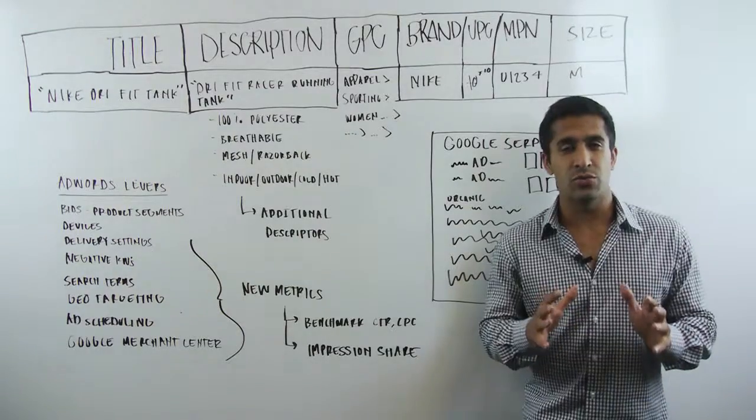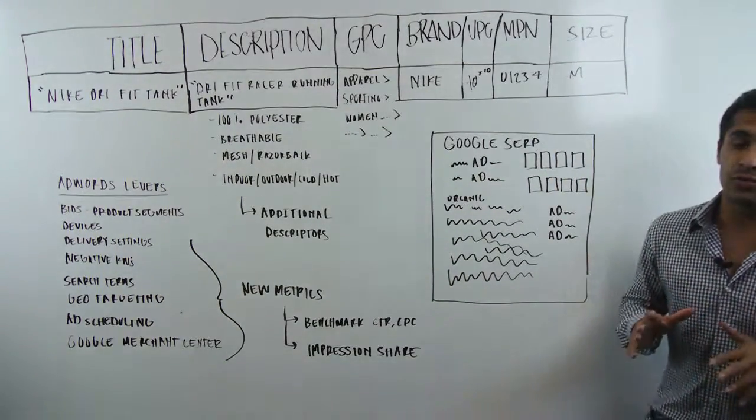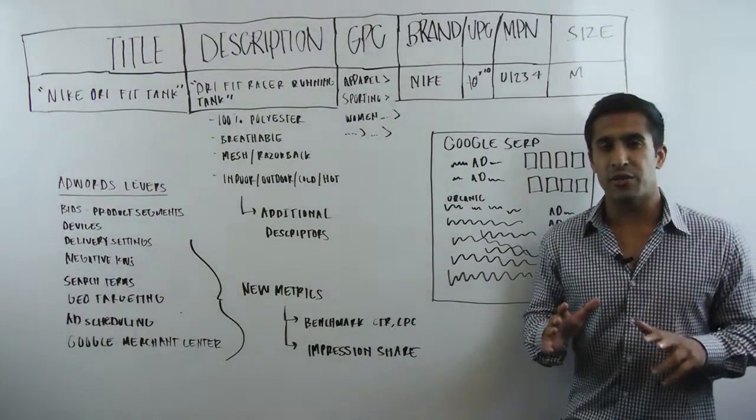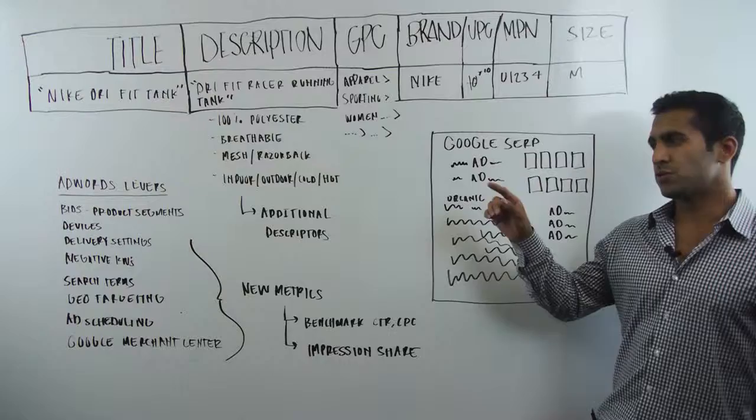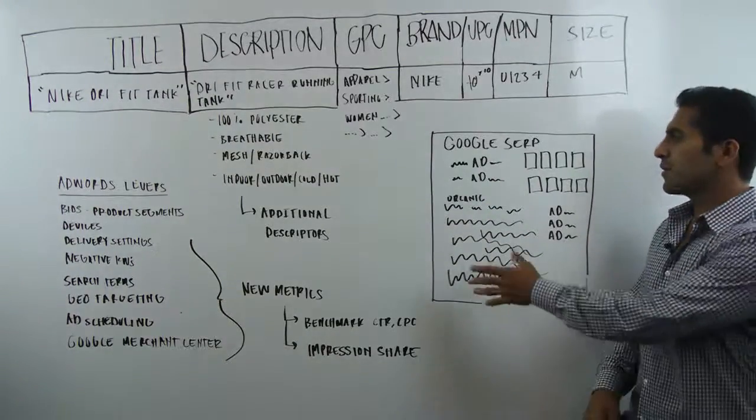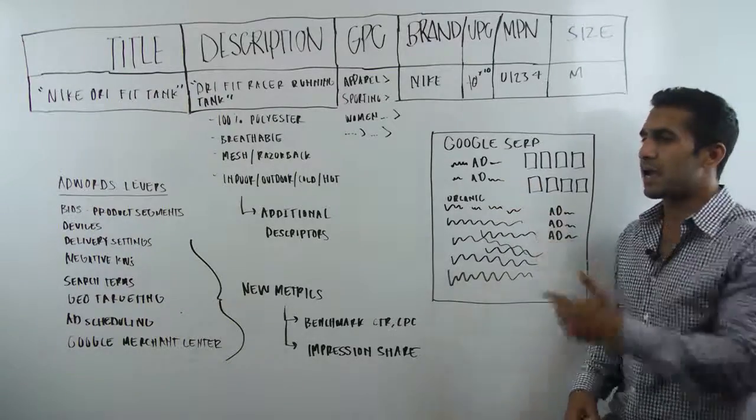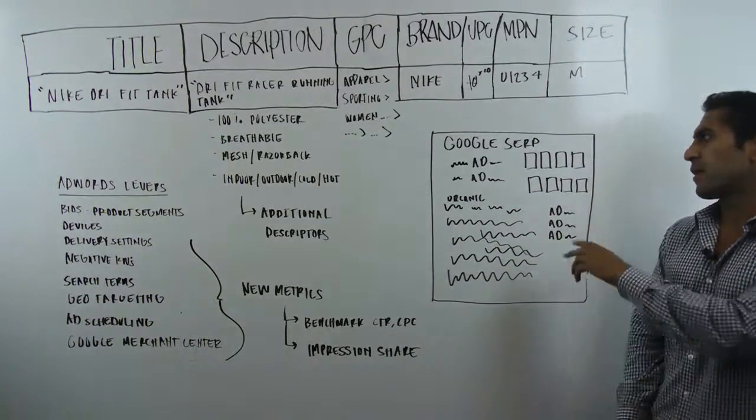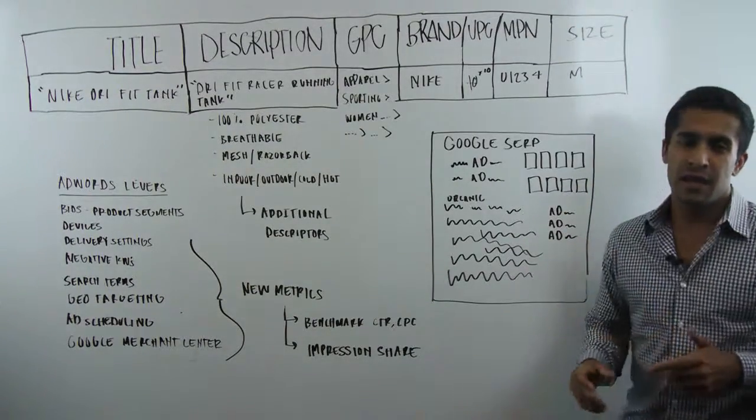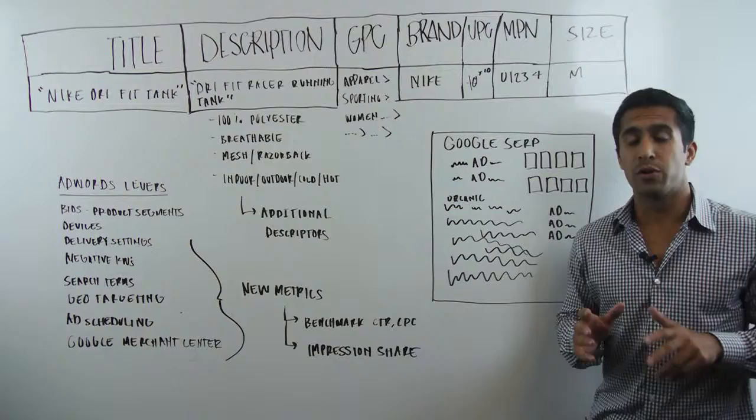One of the reasons that these Google Shopping ads are so compelling is because of the images on the Google Search Engine results page. I actually drew something for you here in 30 seconds. It kind of looks like a Google Search Engine results page. Typically, you're going to see ad text. These are your traditional keyword based ads that have been around for 10, 15 years. And then we've got our product listing ads.